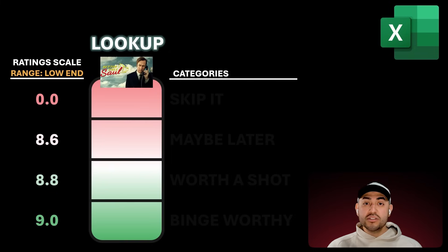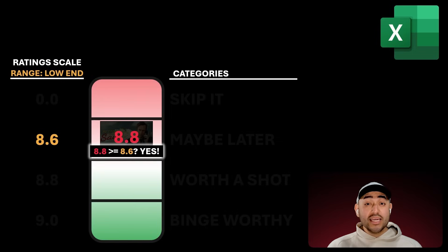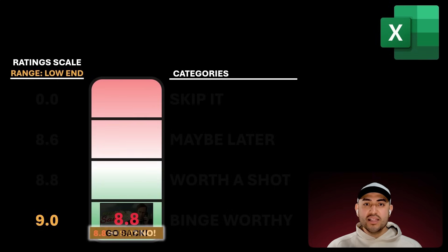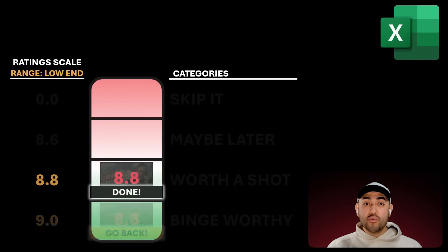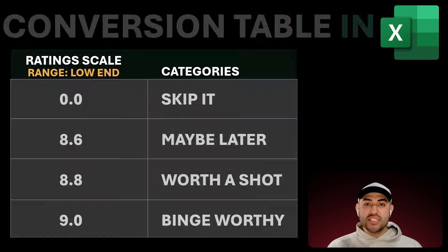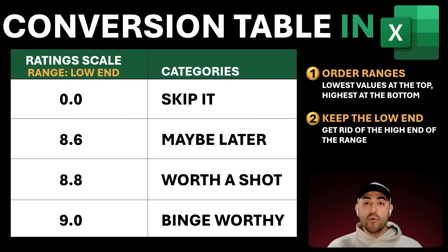Let's look up Better Call Saul to see why this setup works. We'll just keep asking ourselves one simple question: is 8.8 at least as much as the low end of the range? In this case, the threshold to cross is 0.0 — if yes, keep going down the scale, until the answer is no. Like here, we went too far down the scale. Let's go back up to the last time the rating was at least as high as the low end of the range. So Better Call Saul lands in the Worth a Shot category. That's the setup for a conversion table in Excel. Just remember: order the ranges and keep the low end of each range.